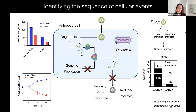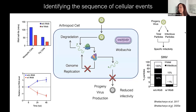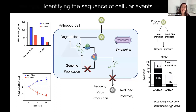Without Wolbachia present, about 60% of virions are able to form a new infection in mammalian or mosquito cells. With Wolbachia present, we see a reduction in total particles but also a massive reduction in infectious particles — with just 1% of that population being able to go on and form an infection. All of these ways that Wolbachia impinges upon the viral life cycle make it a very robust mechanism for pathogen blocking.